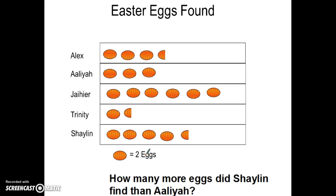The first thing I like to do is get numbers for every person on there. So I'm going 2, 4, 6, and I see half of an Easter egg. Half of an egg is not half of an egg — I really wouldn't want to find half of an Easter egg. Since this picture is worth 2, if I cut it in 2, that's 1 and 1. So this is one more egg, which gets us to 7 for Alex.